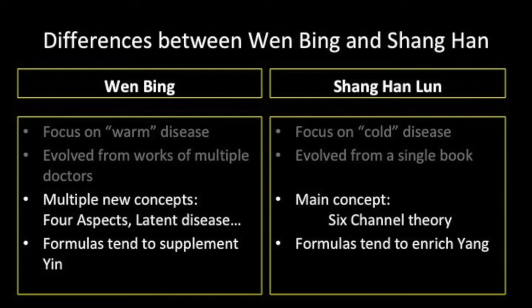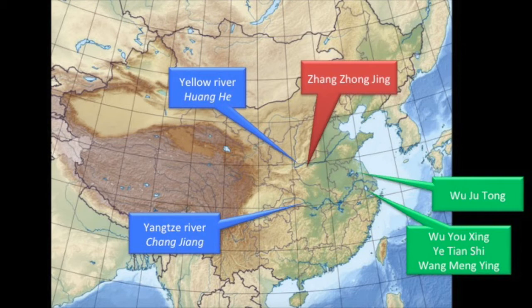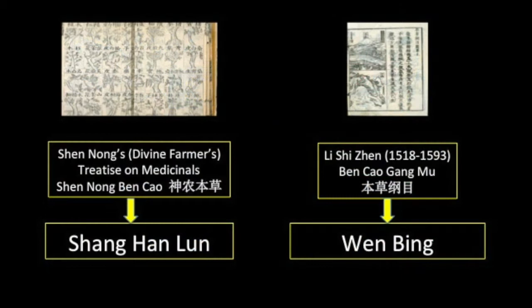In Wenbing, there is much discussion on the role of dampness in disease, and it has been pointed out that the four great doctors of the Qing dynasty lived in very humid areas of China. Another point that is often forgotten is that the herbal reference in the time of Shang Han Lun was the Shen Nong Ben Cao, whereas during the main development of Wenbing, herbal properties were mostly defined by the Ben Cao Gangmu of Li Shenzhen.